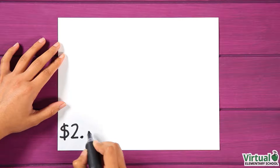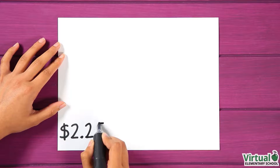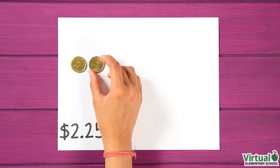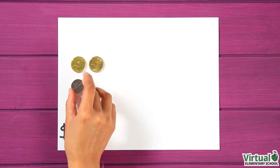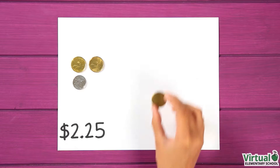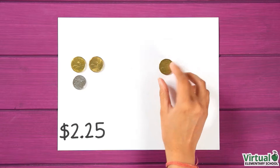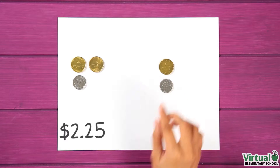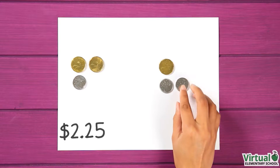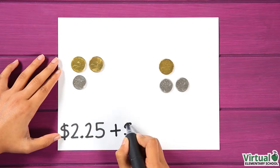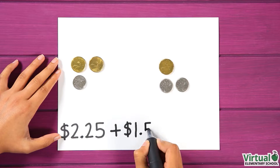I have two dollars and twenty-five cents — one dollar, two dollars and twenty-five cents. I also have one dollar and fifty cents. How much money do I have all together?